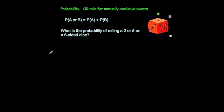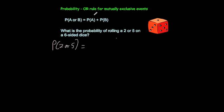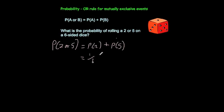Let's have a look at an example. We've got a six-sided dice and the question says: what's the probability of rolling a 2 or a 5 on a six-sided dice? The probability of a 2 or a 5 equals the probability of a 2 plus the probability of a 5. The probability of a 2 is 1 out of 6, plus the probability of a 5, which is also 1 out of 6.